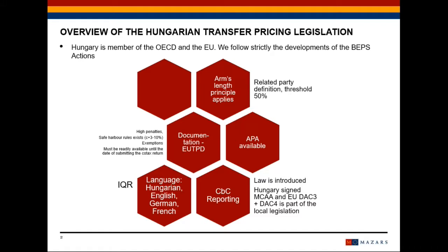The transfer pricing documentation must be readily available until the date of submitting the corporate tax return. And if a tax audit starts, then the documentation must be handed over to the tax authority within three days. The documentation can be prepared in Hungarian, English, German, and French. If you prepare the benchmarking analysis, in certain cases interquartile range must be applied to identify the arm's length remuneration.